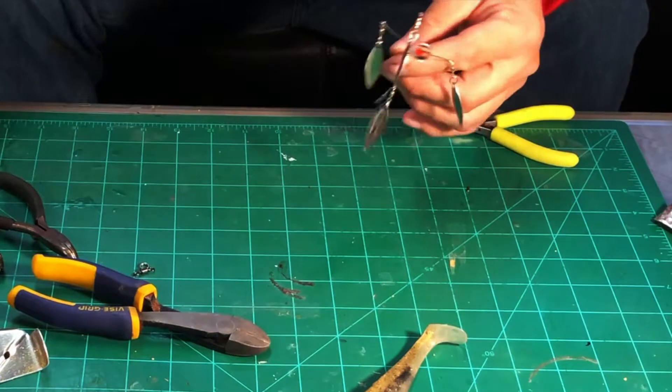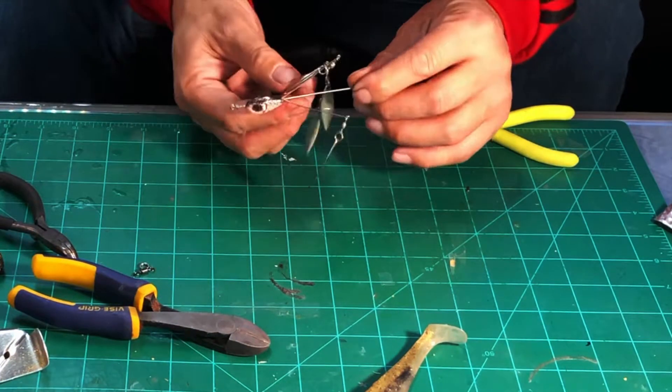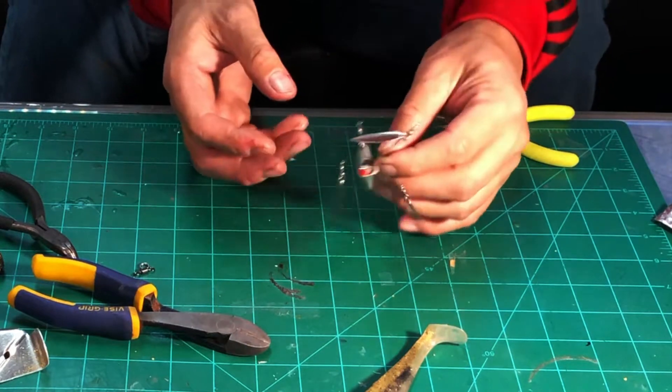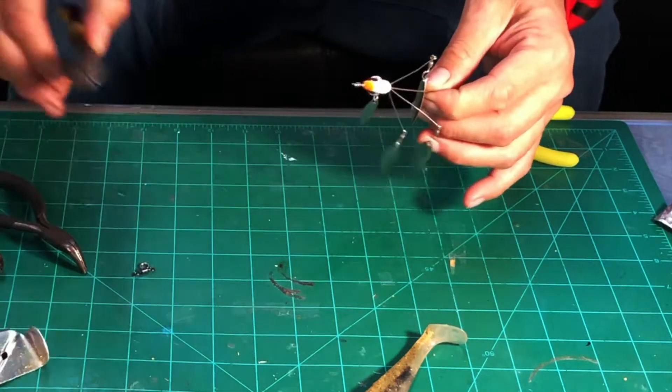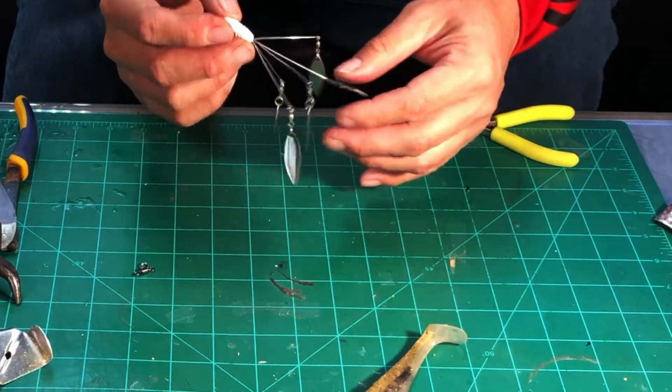Right now we're going to go to this Booyah Alpine Rake, which is kind of like a mini A-rig. If you've seen some of my bite of the day videos, I've caught quite a few seven pounders. Actually, it seems to catch a lot of seven pounders.